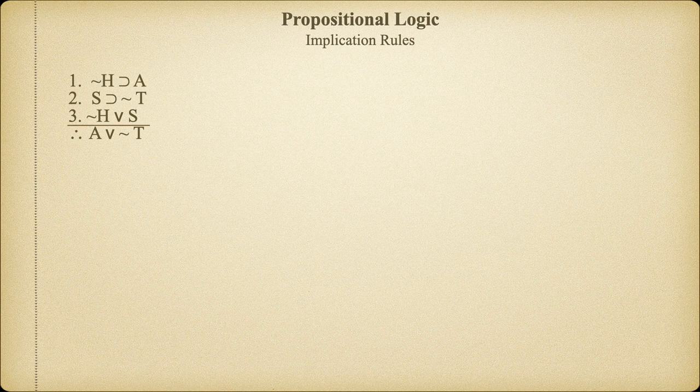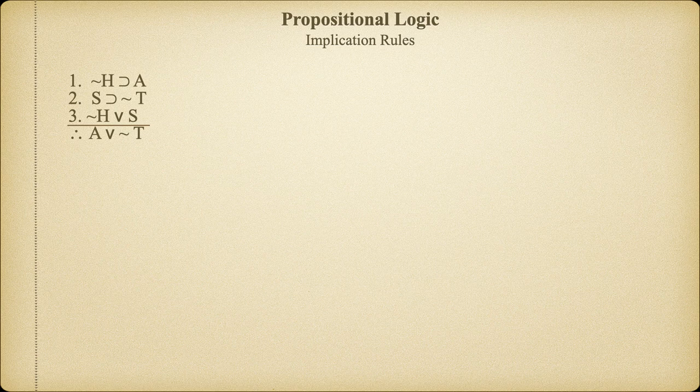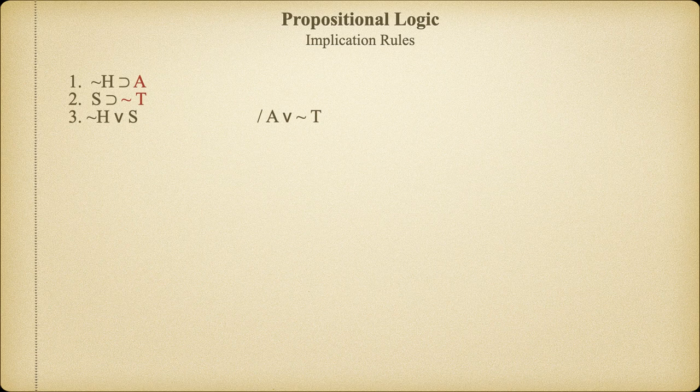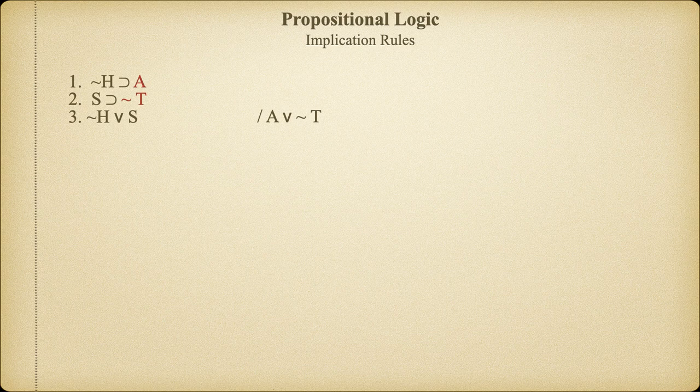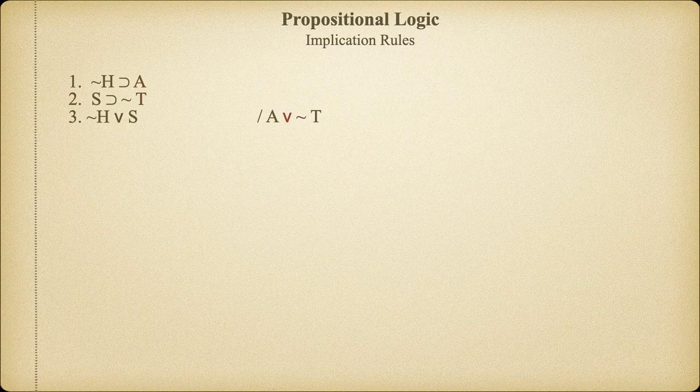Suppose we're given this argument and we want to verify that the conclusion validly follows from the premises we've been given. First, we need to move the conclusion out of the way to allow us to show the steps from which it might be derived. What we now need to figure out, if we can, is how, using our eight rules of logical inference, we can put the premises together to yield the conclusion A or not T. The next thing to note is what form the conclusion takes. It's a disjunction, and that's a clue.